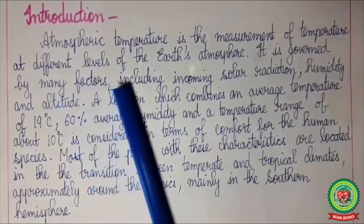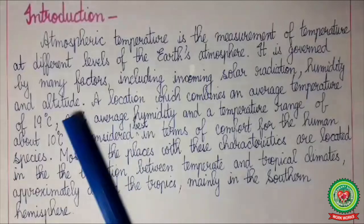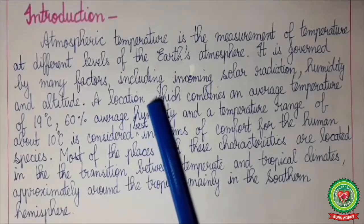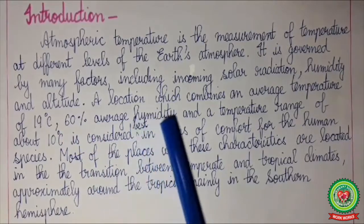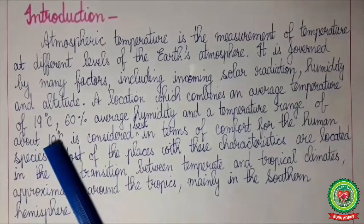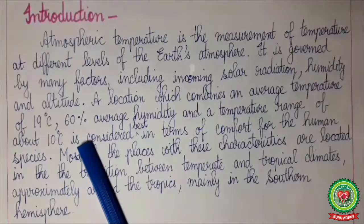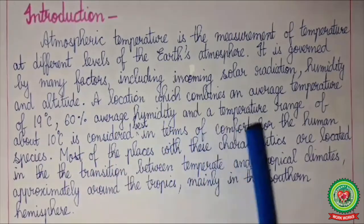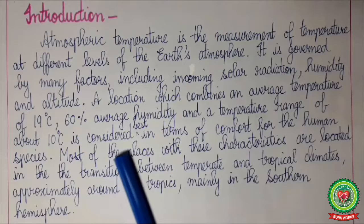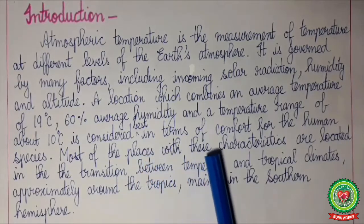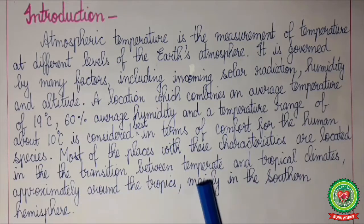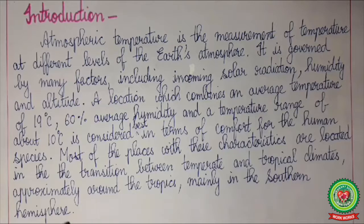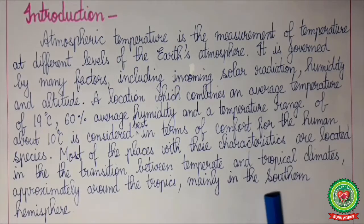Atmospheric temperature is a measurement of temperature at different levels of the Earth's atmosphere. It is governed by many factors including incoming solar radiation, humidity, and altitude. A location which combines an average temperature of 19 degrees Celsius, 60 percent average humidity, and a temperature range of about 10 degrees Celsius is considered best in terms of comfort for the human species. Most such places are located in the transition between temperate and tropical climates, approximately around the tropics, mainly in the southern hemisphere.